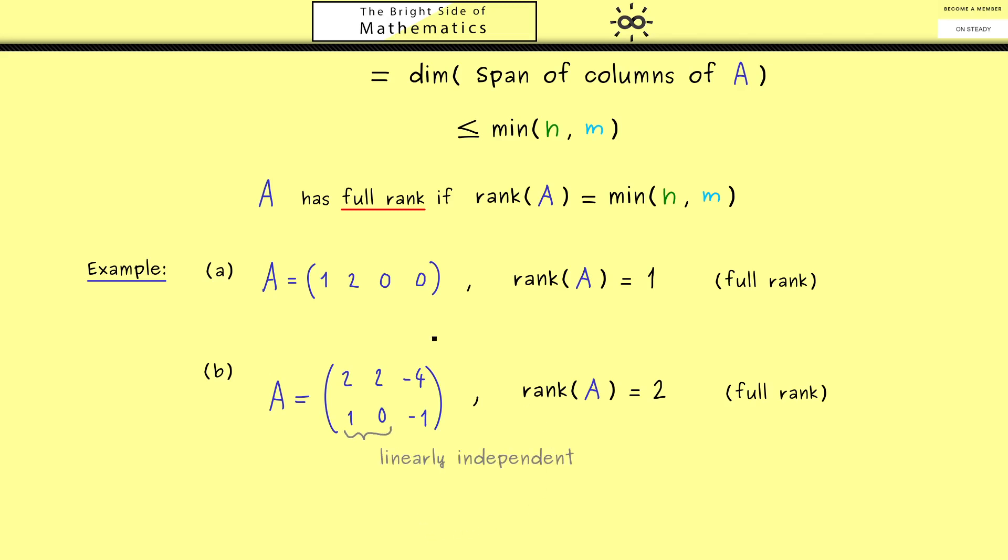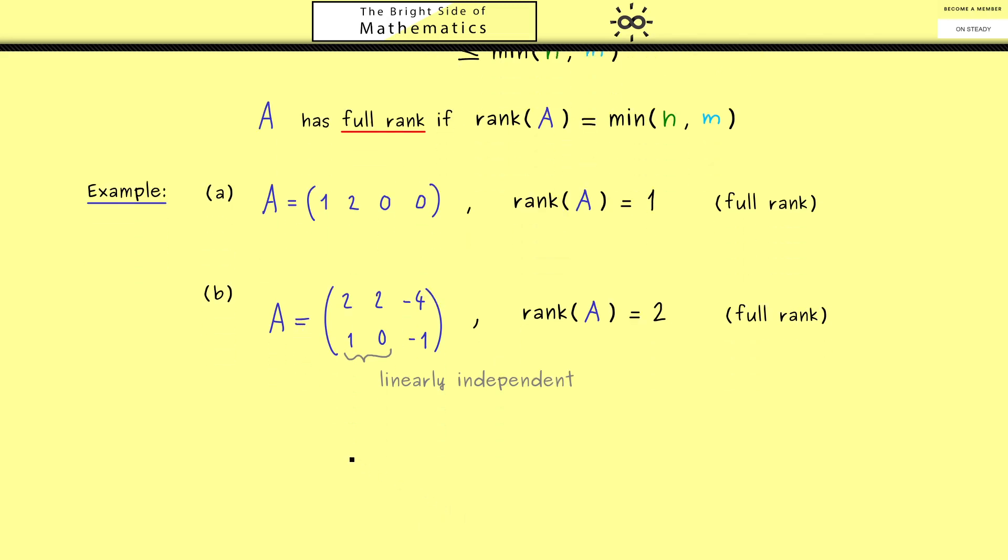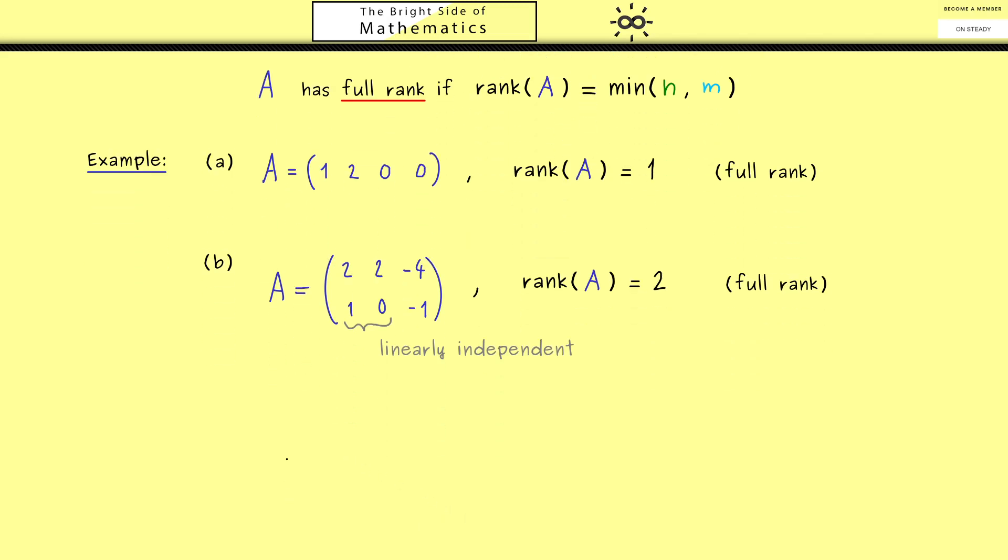Again, essentially you just have to see that the first two vectors here are linearly independent. And now I can tell you, in this example we already see the Rank-Nullity Theorem in work. And maybe to motivate it, let's draw a sketch to see what the matrix A does. So first we know it maps R^3 into R^2. Or saying it more precisely, this is what the map F_A does.